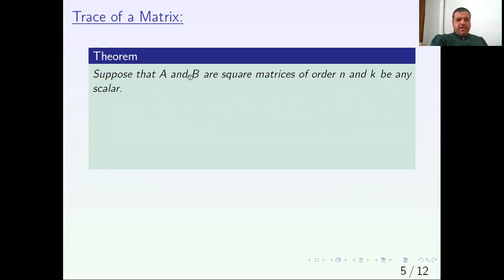Theorem: Suppose that A and B are square matrices of order N and K be a scalar. Then trace of A plus B equals trace of A plus trace of B.